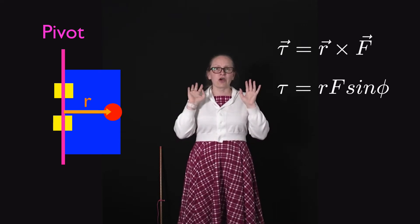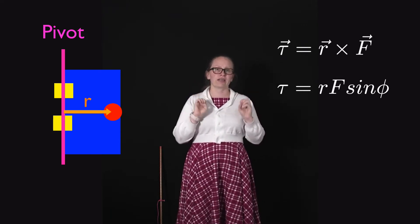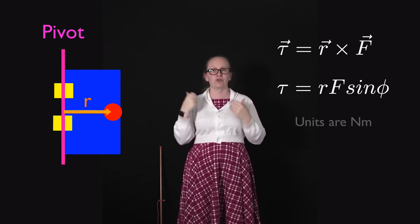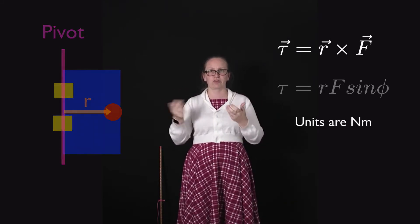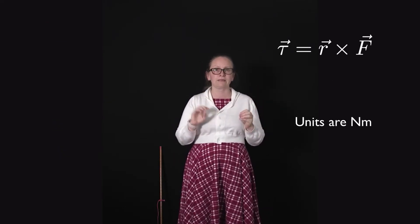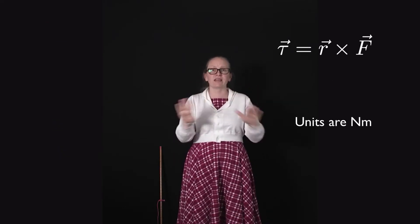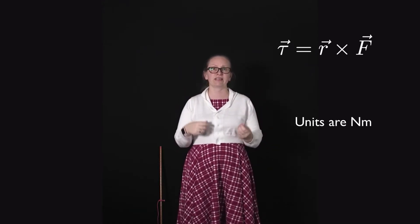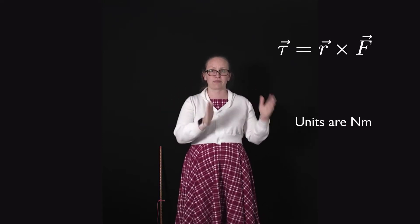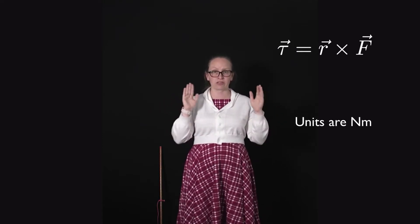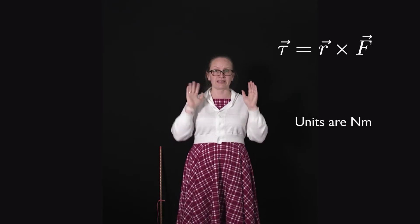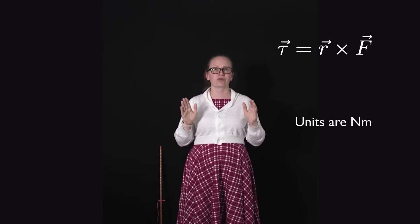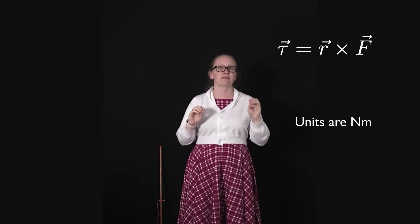Considering the units, as torque is the multiplication of the radius and the force, it's got units equal to Newton meters. For torque we never write the units as joules. Work was also calculated as distance times force, but in that case it was a dot product, so it was a scalar and the units were given as joules. Don't give the units as joules for torque, give the units as Newton meters.